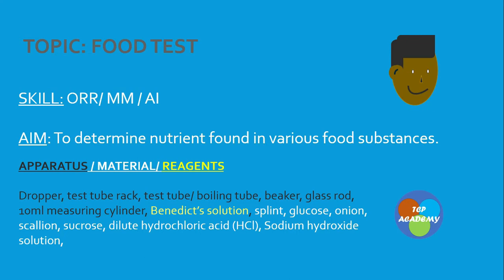The apparatus and reagents needed for this lab are: dropper, test tube, test tube rack, boiling tube, beaker, glass rod, 10 ml measuring cylinder, Benedict solution, splint, glucose, onion, scallion, sucrose, dilute hydrochloric acid, and sodium hydroxide.